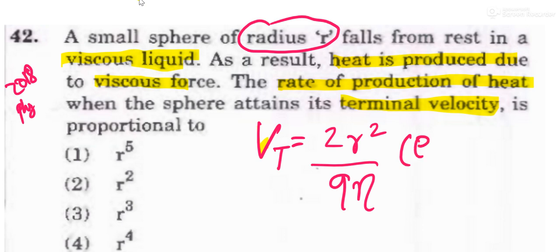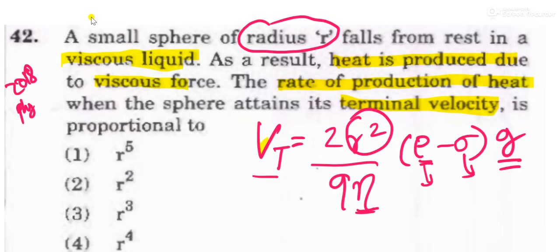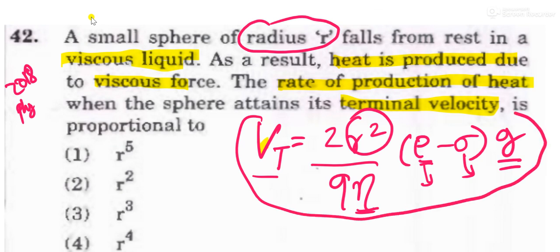The terminal velocity formula is: Vt = (2R²(ρ - σ)g) / 9η. Here, Vt is the terminal velocity — the velocity at which the sphere ball moves inside the liquid. R is the radius of the sphere ball, η is the coefficient of viscosity, ρ is the sphere ball density, σ is the liquid density, and g is gravity. This is the main formula you learn in viscosity.